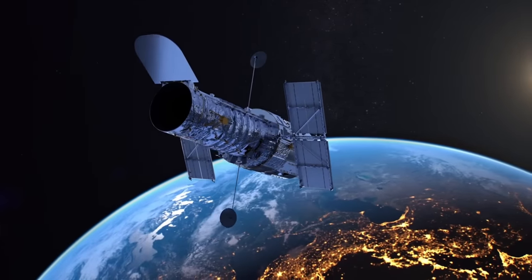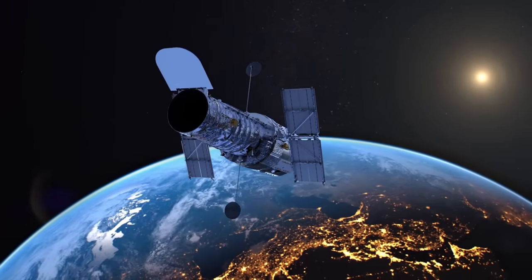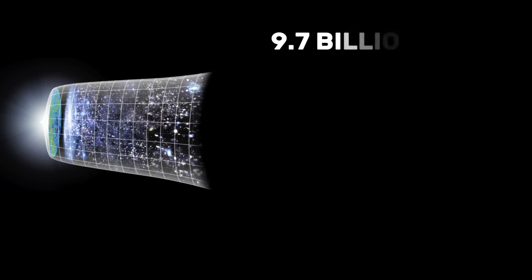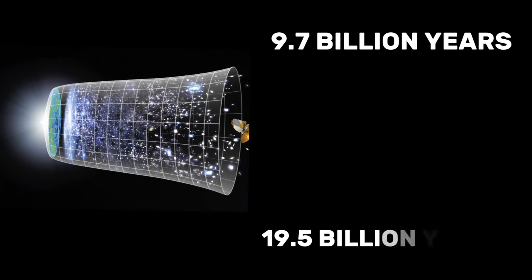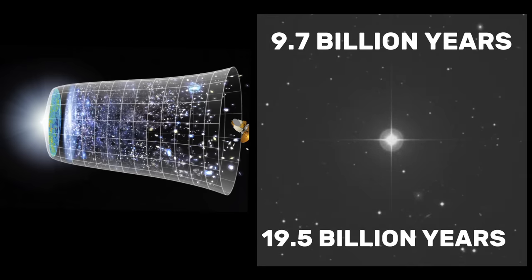When the Hubble Space Telescope was launched, it revealed that the universe could be as young as 9.7 billion years, or as old as 19.5 billion years. But this younger value presented a huge problem. It would mean the universe was younger than the oldest known stars.